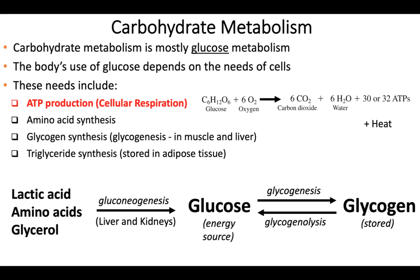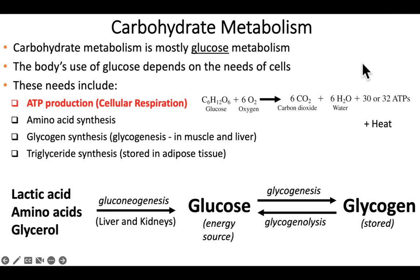So what do we need glucose for? The number one thing is energy production — ATP production, cellular respiration. We need oxygen along with glucose to generate a lot of our energy. We also use glucose for amino acid synthesis. We can store glucose in the form of glycogen, and we call that glycogenesis. That's largely done in the muscle and liver.